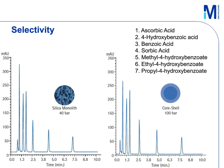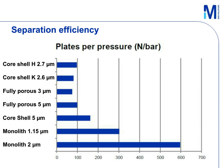All of this under less than 50% of the back pressure: 40 bar on the monolithic column versus 100 bar on the core-shell column. If we plot the separation efficiency per pressure, it is very clear that monolithic columns offer higher performance per back pressure than columns packed with particles of any size — whether fully porous or core-shell. This kind of performance gives us a lot of flexibility in method development.